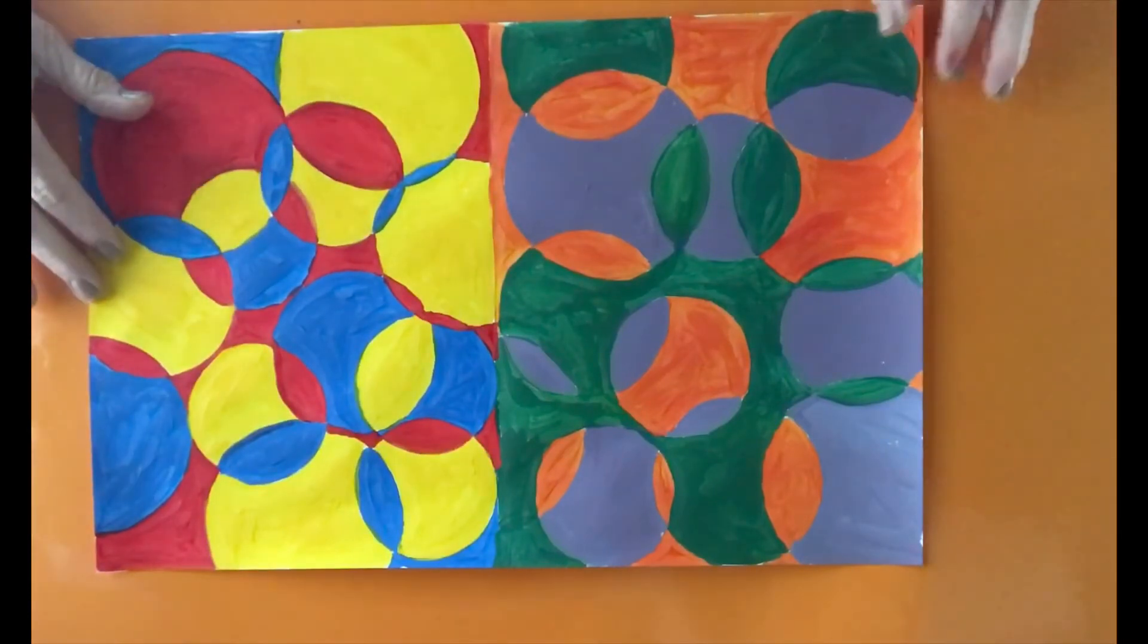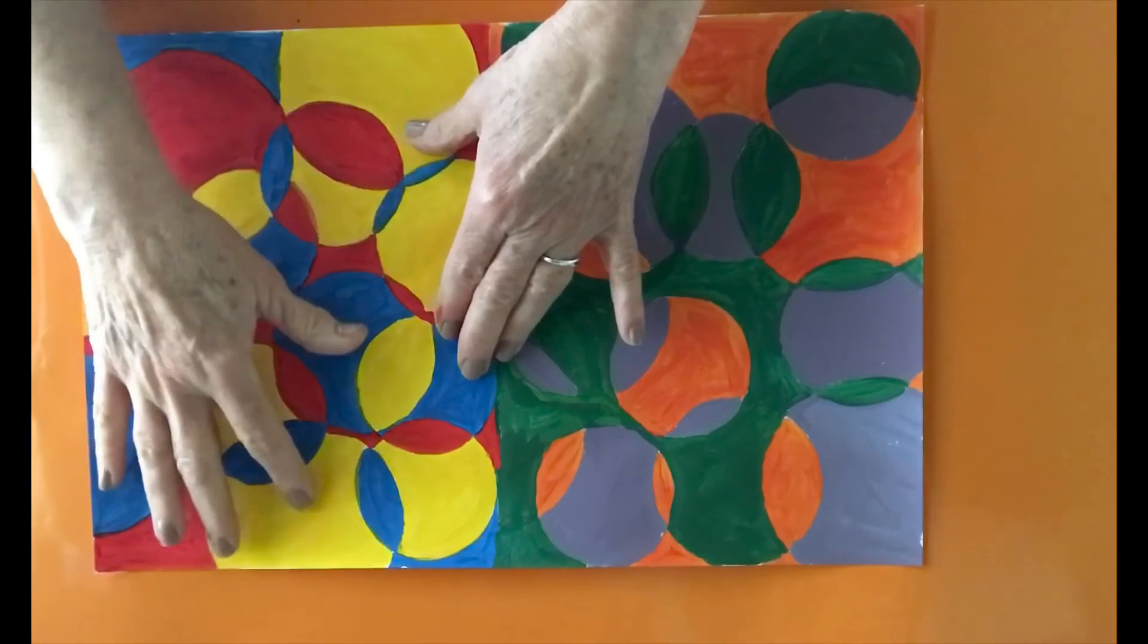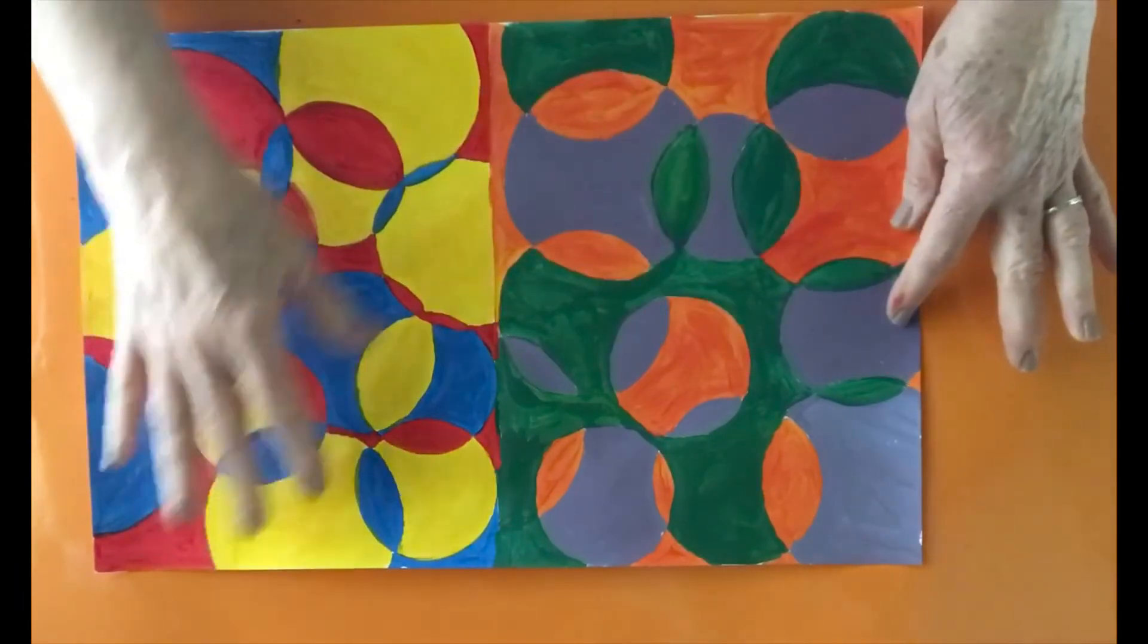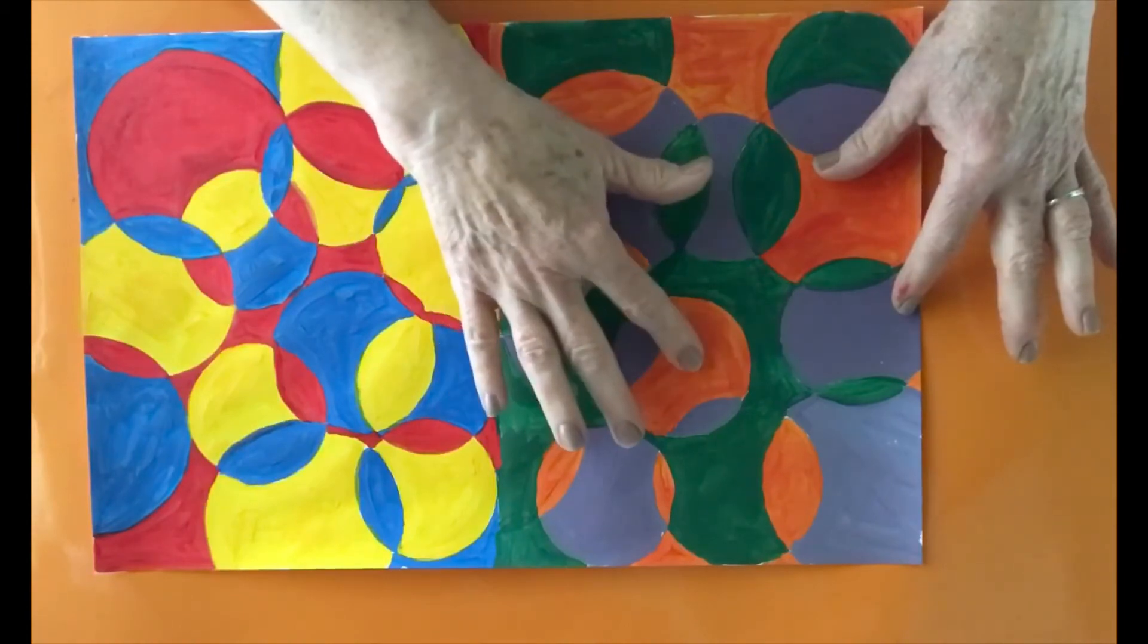In this art project, we are taking a look at primary colors: blue, red, yellow, and then we are looking at secondary colors: green, violet, and orange.